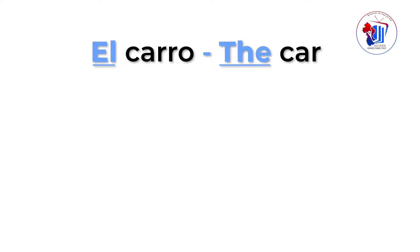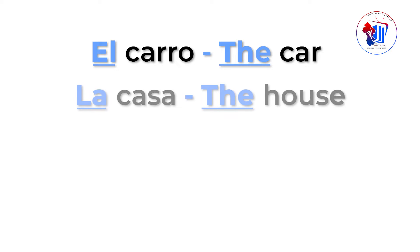El artículo definido "the". Número uno: si en inglés queremos decir "el carro", carro significa car, en inglés decimos "the car". Ejemplo número dos: la casa. Casa en inglés es house. Si queremos decir la casa, decimos "the house".